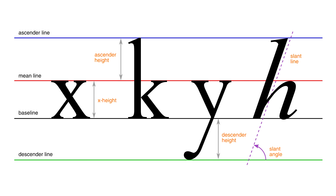Finally, we have what I call the slant line. I'm sure there's an official name for it, I've just never seen it. For cursive and calligraphic writing, this defines the amount of tilt a letter has. It is typically measured counter-clockwise from the baseline, meaning a straight up-and-down letter would have a 90-degree slant. If you are only using vertical letters, you don't have to use a slant line. And that's pretty much everything you need to know.